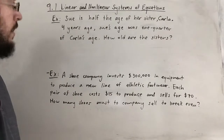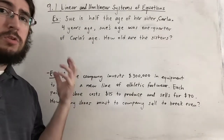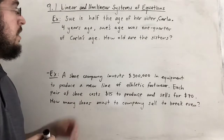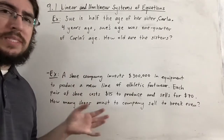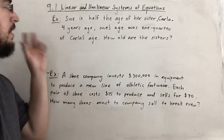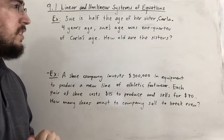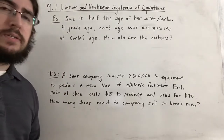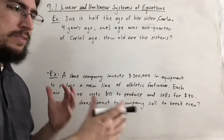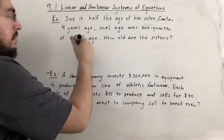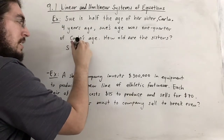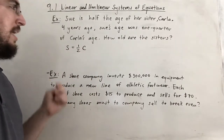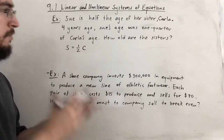I've decided to show two types of examples: an age problem and a cost versus revenue problem. The first problem: Sue is half the age of her sister Carla. Four years ago, Sue's age was one quarter of Carla's age. How old are the sisters? We know Sue's age S equals one half of Carla's age C — that's our first equation in the system.